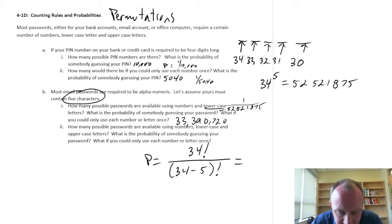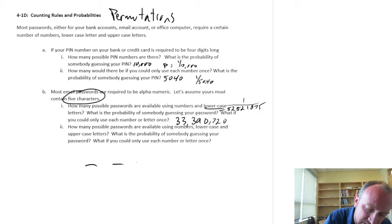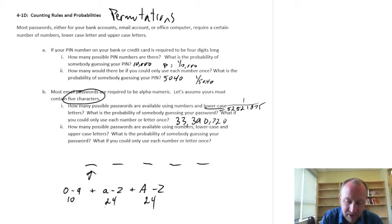How many possible passwords are available if I can use numbers, lowercase and uppercase passwords? So, now, again, I still have, let's come down here, five values in my password. But now, this can be either 0 to a 9, so that's 10, plus lowercase a to z, so 24, plus uppercase a to z, that's another 24. So, there's 48, so that's 58 possible values in any of these positions.